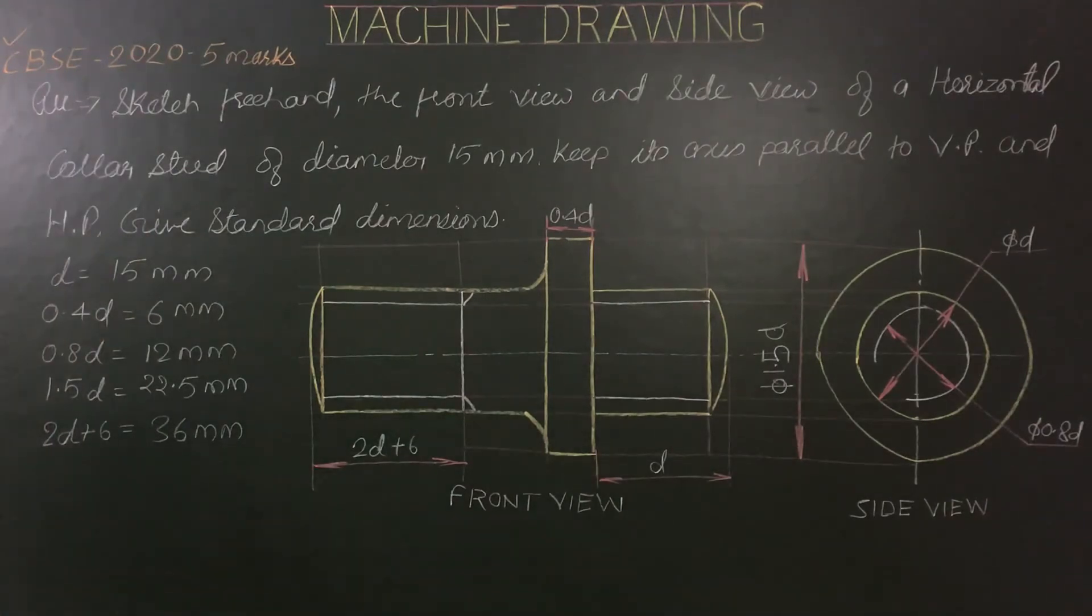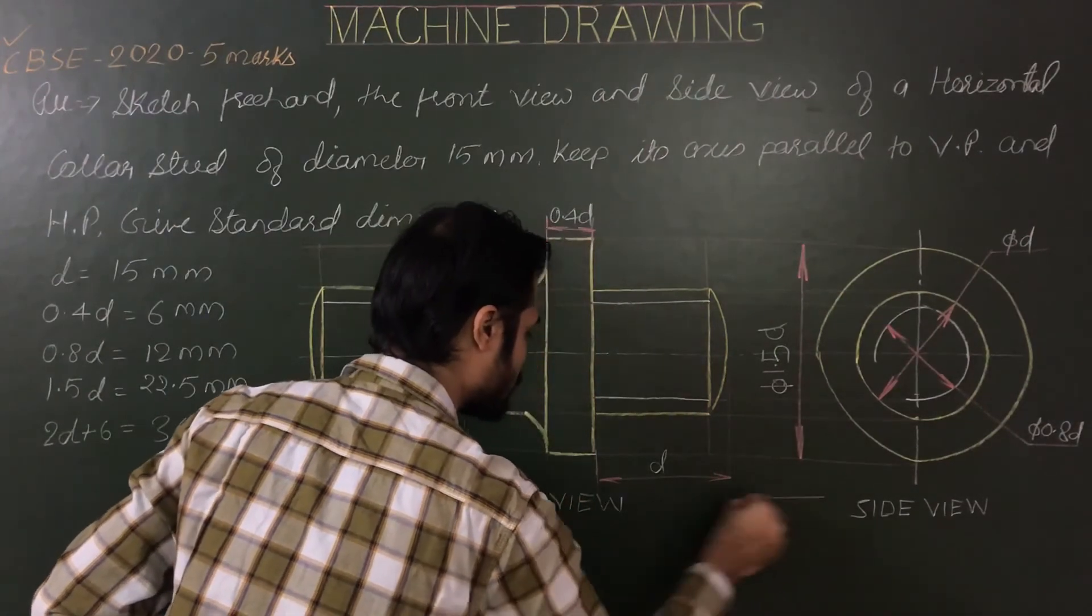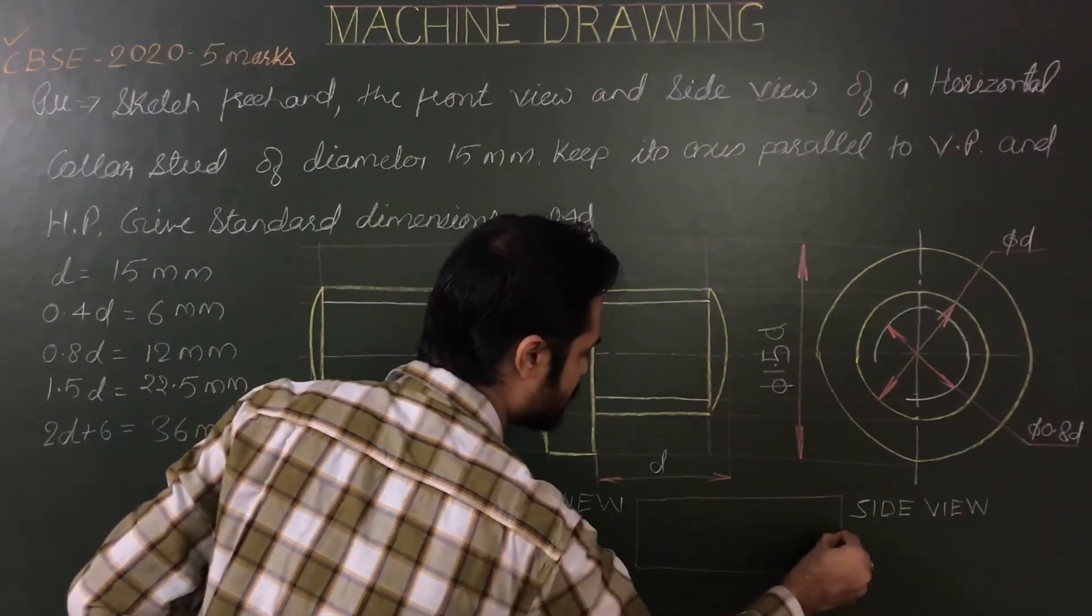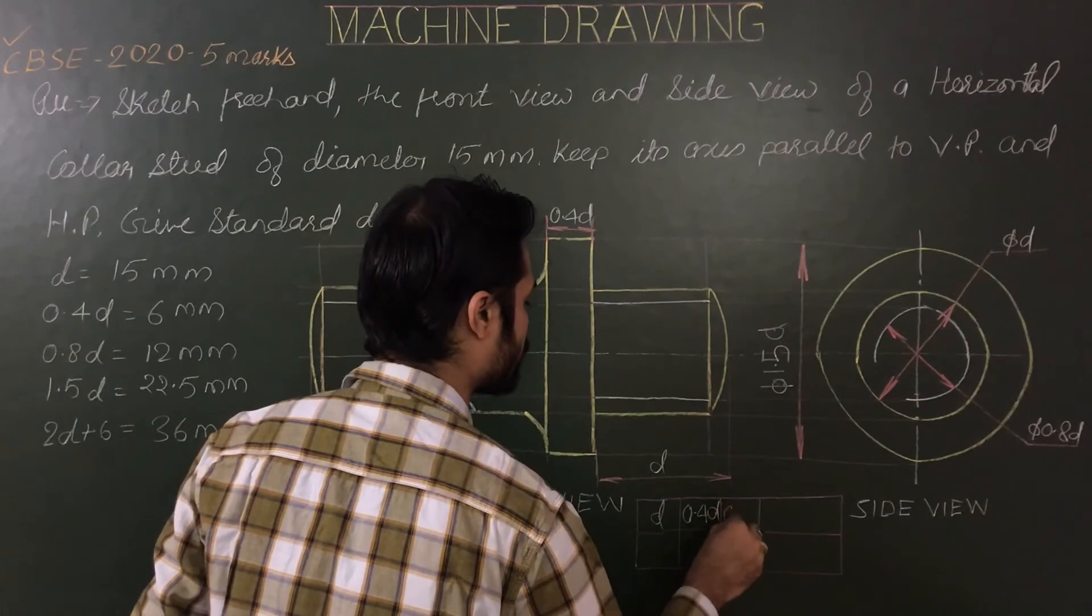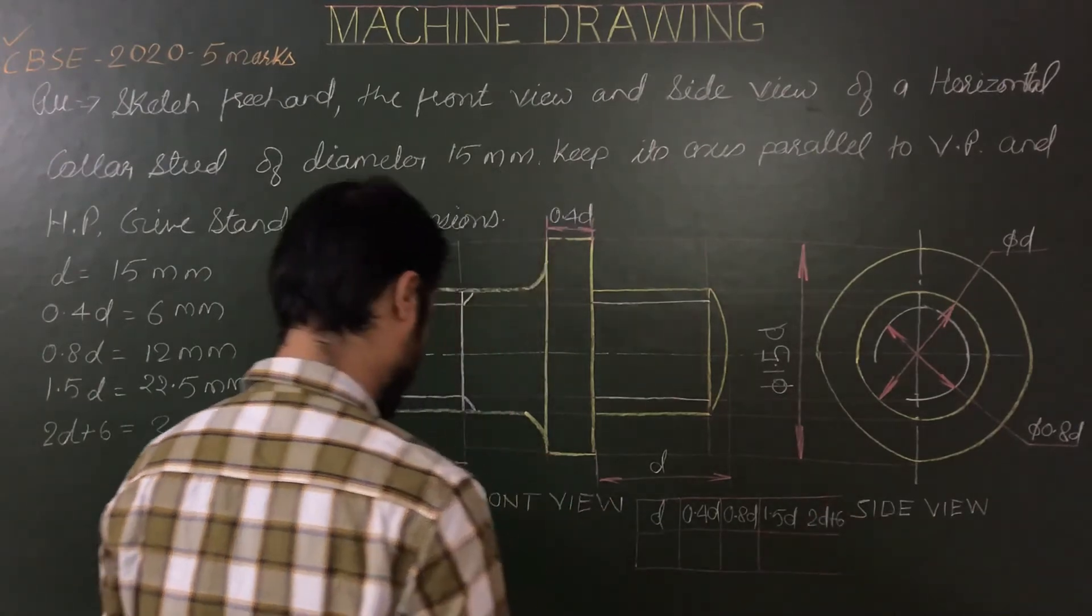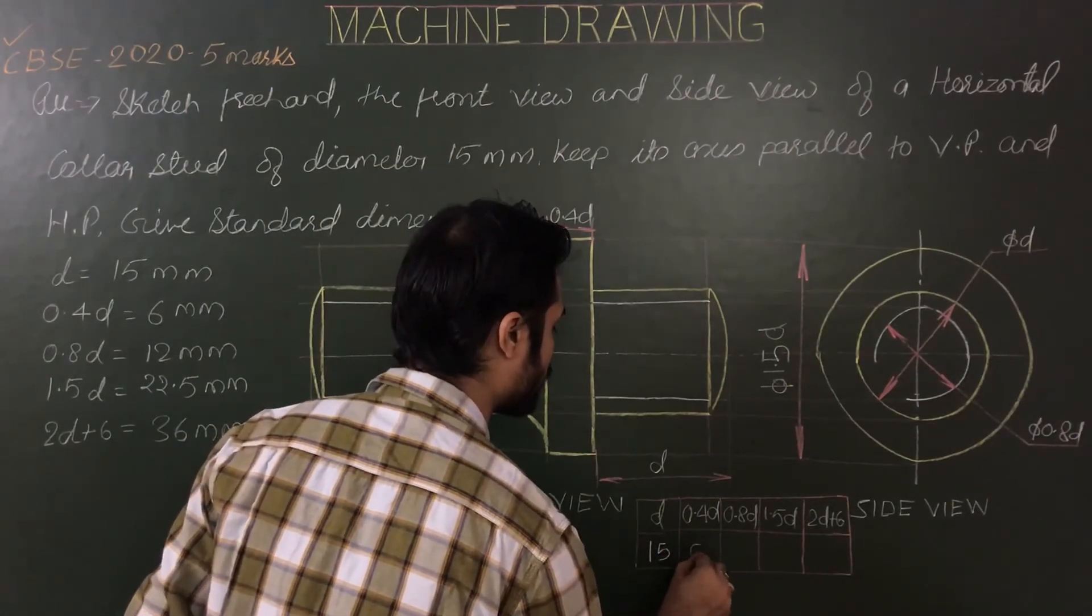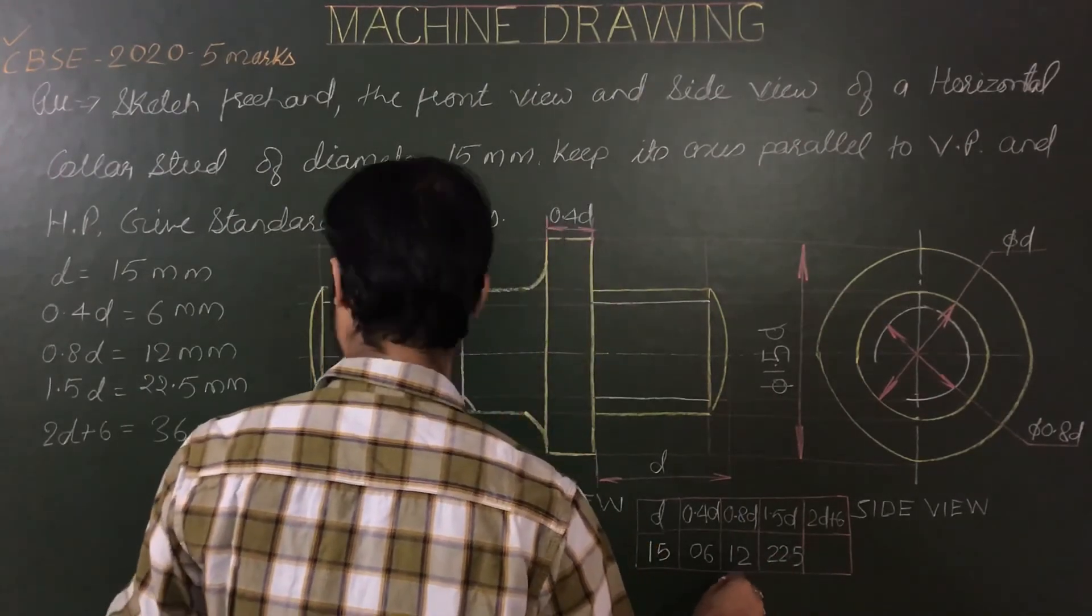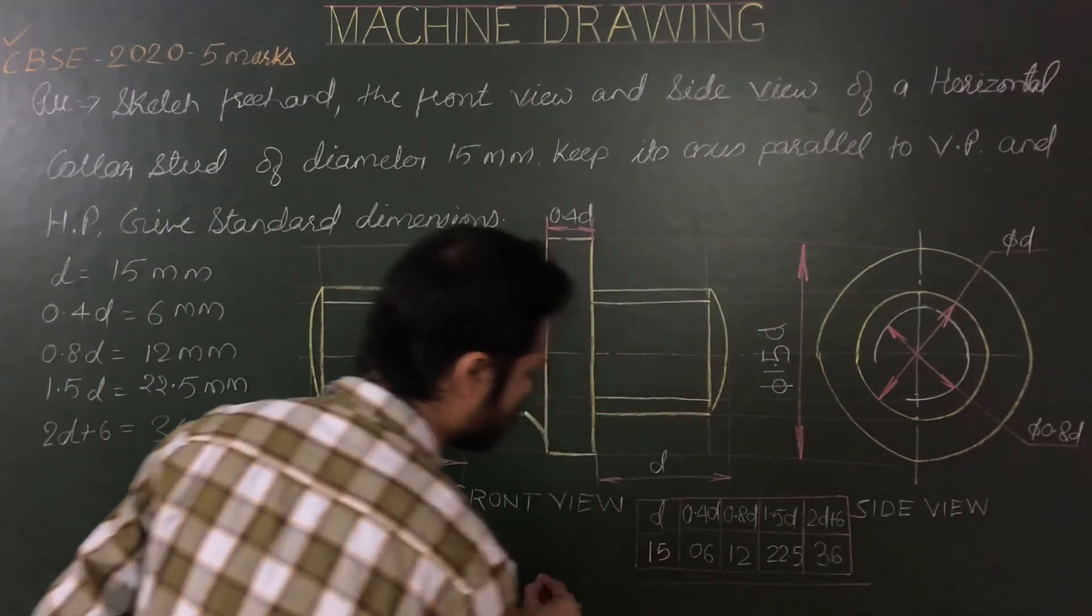Then table for standard dimensions. These are values, but we have to show these dimensions in a table like this: 2d plus 6 equals 36, and last heading of the drawing.